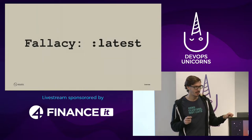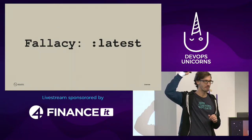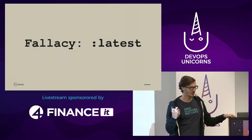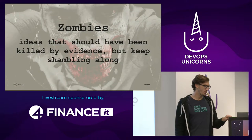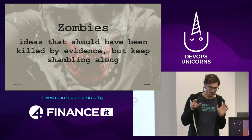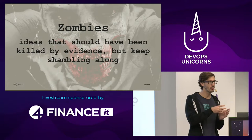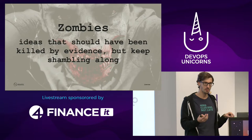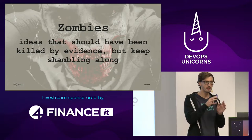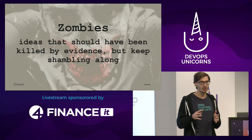Another thing we see frequently — who is using 'latest' for external dependencies? We don't have 'latest' on our containers and we strongly believe in that. I call this one of the zombies — ideas that should have been killed by evidence but are still around. In most programming languages, when you define dependencies — Maven, Gradle — you can't just say 'I want the latest.' You might specify a version range, but not just 'give me whatever is latest,' because it turned out over time that's brittle and not a good idea.